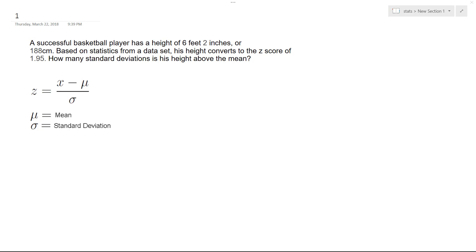We have a successful basketball player who has a height of 6 feet 2 inches. Based on statistics from a data set, his height converts to a z-score of 1.94. So how many standard deviations is this above the mean?